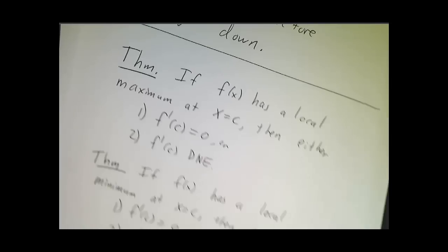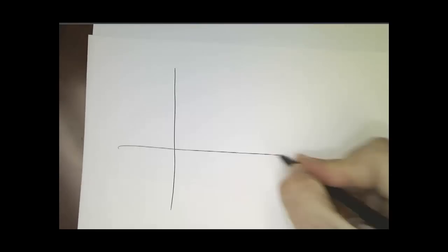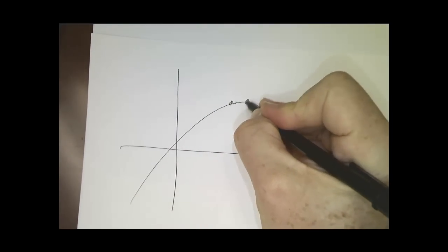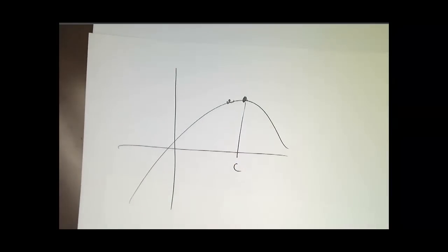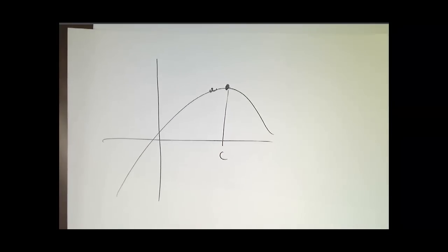So let's see why that is. Let's imagine that we've got a function here, and somewhere in the middle, actually around there, is a spot where we have a local maximum.